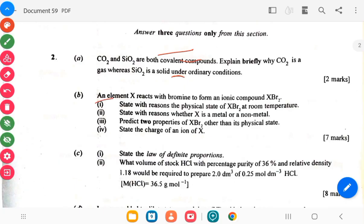So the B says an element X reacts with bromine to form an ionic compound. XBr2 states with reasons the physical state of XBr2 at room temperature. Predict two properties of XBr2 other than its physical state. Then the IV says state the charge of X.